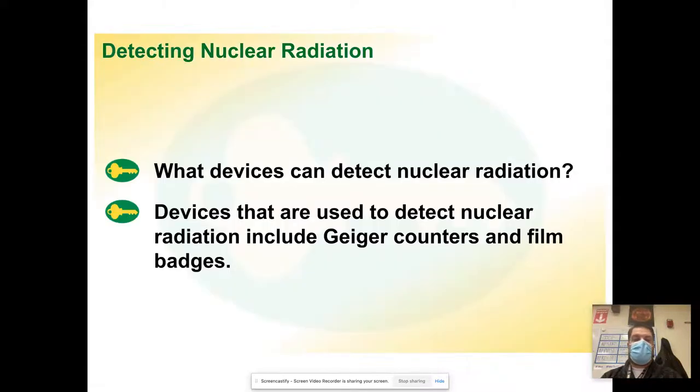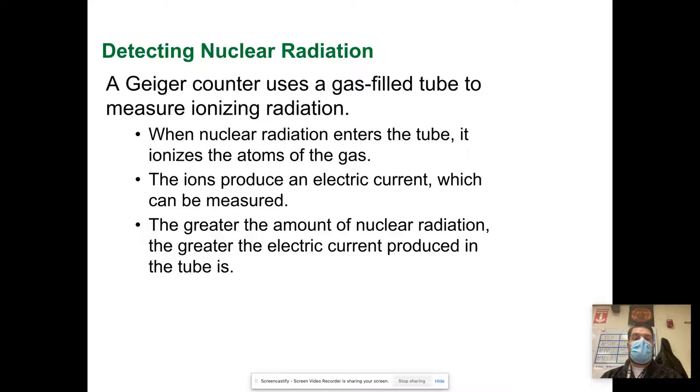What devices detect nuclear radiation? A Geiger counter and film badges. That's one of your reading guide questions. A Geiger counter is used. It has a tube that's filled with gas, and when the nuclear radiation enters the tube it ionizes the atoms of gas. I have some Geiger counters in the cabinet. The ions produce an electric current which can be measured. The greater the amount of nuclear radiation, the greater the electric current produced. A Geiger counter, that's the little ticking noise that means it goes click, click, click, click, and it'll click faster.